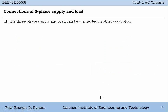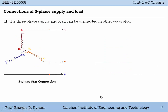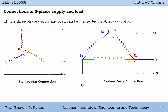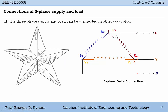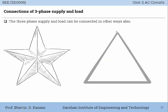The three-phase supply and load can also be seen in other visual representations where the connections are technically the same as the previous diagram but presented differently. The star connection configuration looks like a star shape with a common point, whereas delta connection looks like a triangle — that is nothing but a geometrical concept.